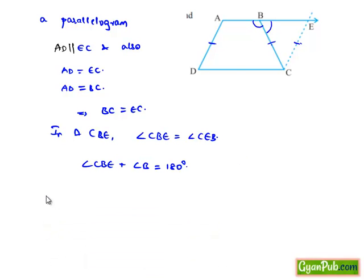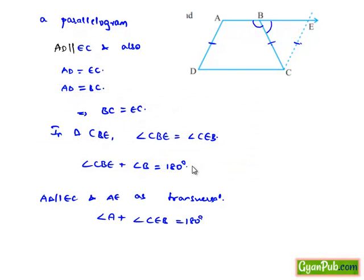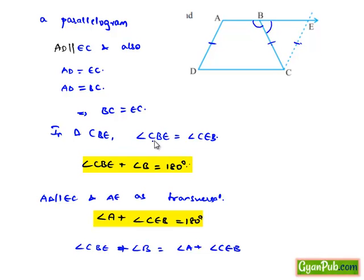Now if we consider AD parallel to EC with AE as transversal, then angle A and angle CBE lie on the same side of the transversal. The sum of co-interior angles is 180 degrees, so angle A plus angle CBE equals 180 degrees. Since both expressions equal 180 degrees, angle CBE plus angle B equals angle A plus angle CBE, and cancelling angle CBE gives angle A is equal to angle B. This completes the first part of the proof.